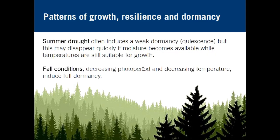In the summer, drought can also induce a weak dormancy, which can disappear if fall rains come along and moisture becomes available. During fall conditions, because of decreasing photoperiod and lower temperatures, it starts to induce full dormancy.